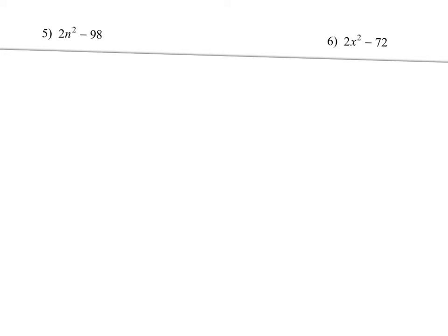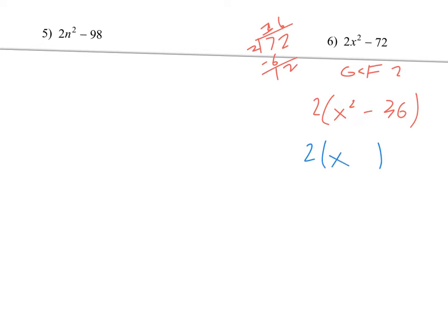Next up, number six. I do see a GCF on this one — I can factor out a 2 because they're both even. So I'm going to take a 2 out front and divide both terms by 2. 72 divided by 2 is 36. And now it is the difference of perfect squares. So I take the square root: it'll be x and 6, and then one plus and one minus. That 2 just stays out front.